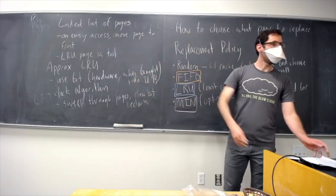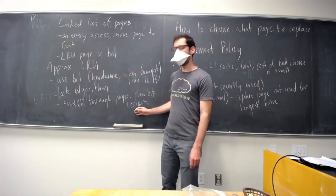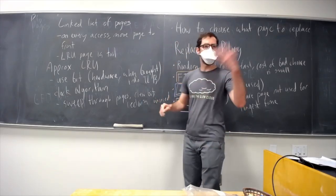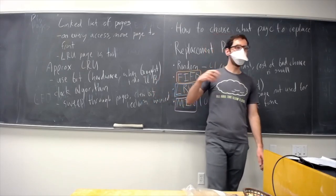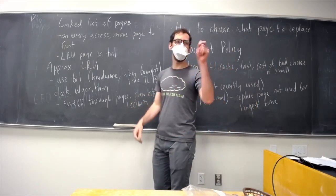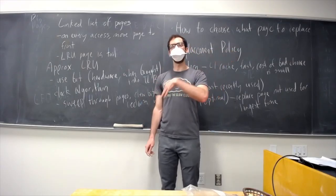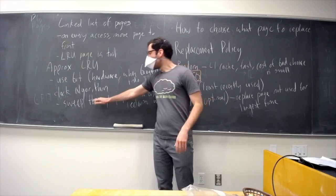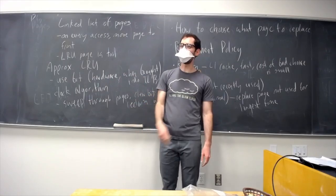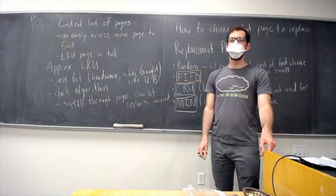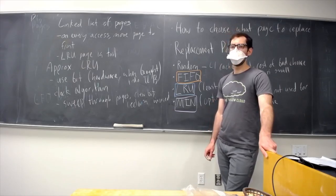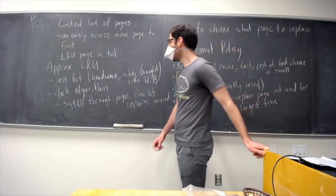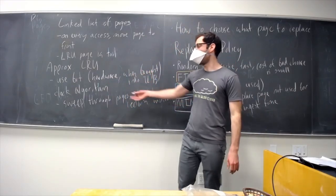If we have a use bit that gets set by the hardware when we bring the page table entry into the TLB, we can use something called the clock algorithm. Every so often, the clock algorithm goes through all the pages — any that are unused, meaning their reference count is zero, we can free those up, and at that time reset the use bits. The use bits will represent pages used since the last sweep. The name comes from the metaphor of a clock hand sweeping through all the pages.